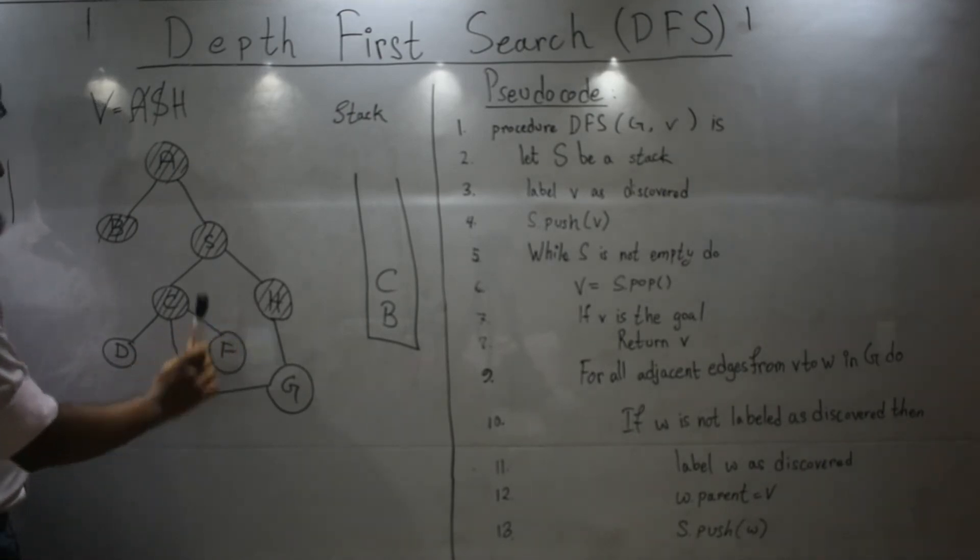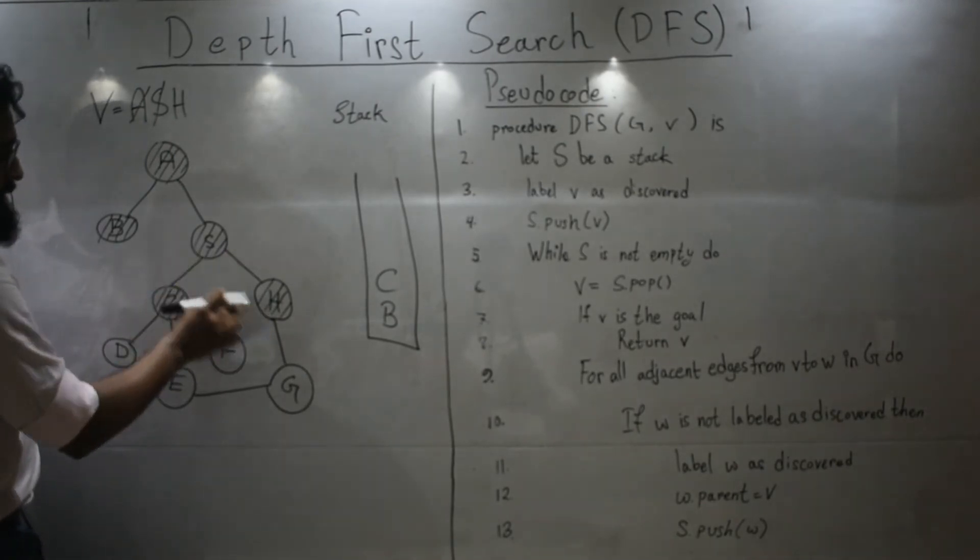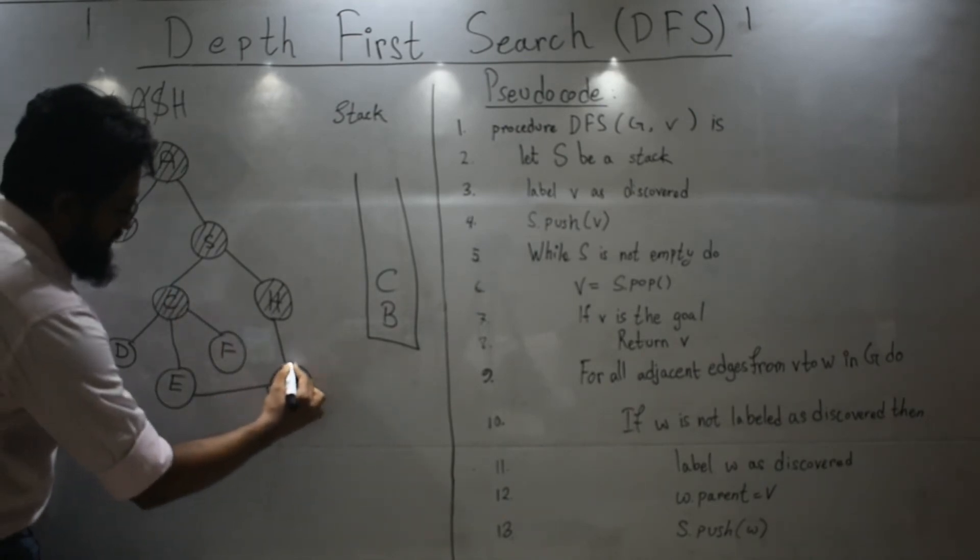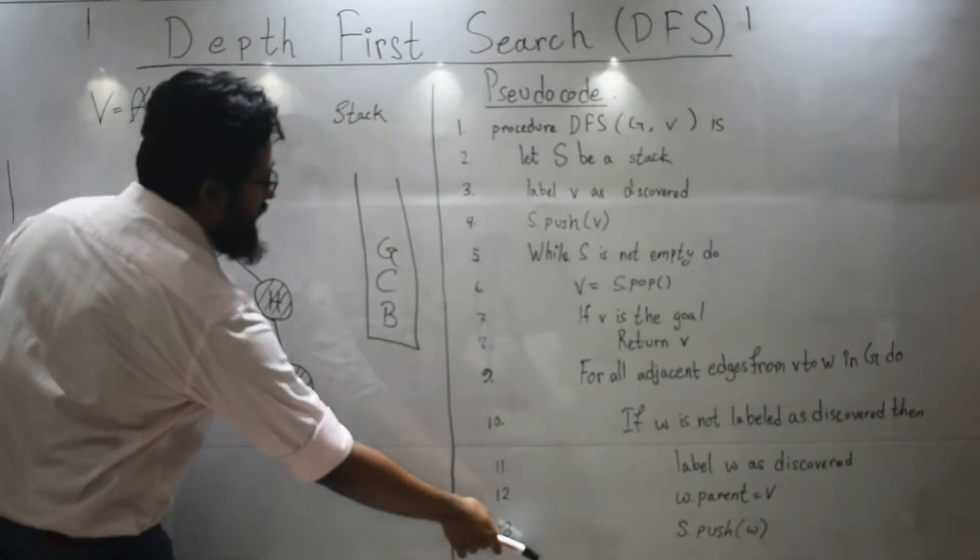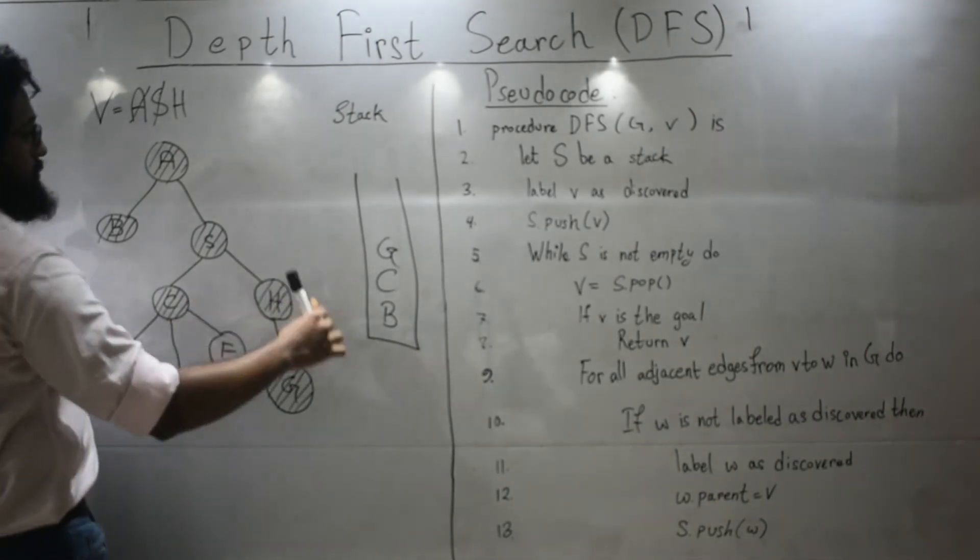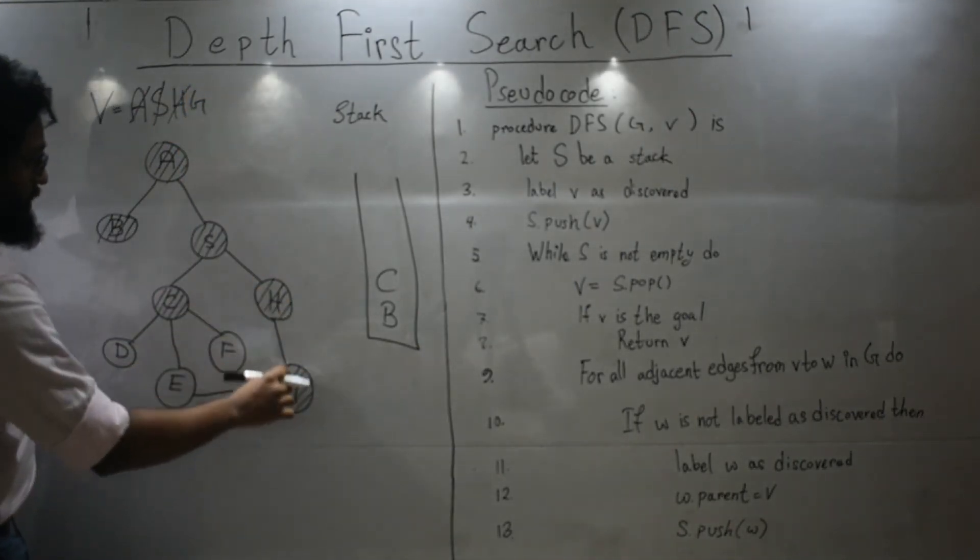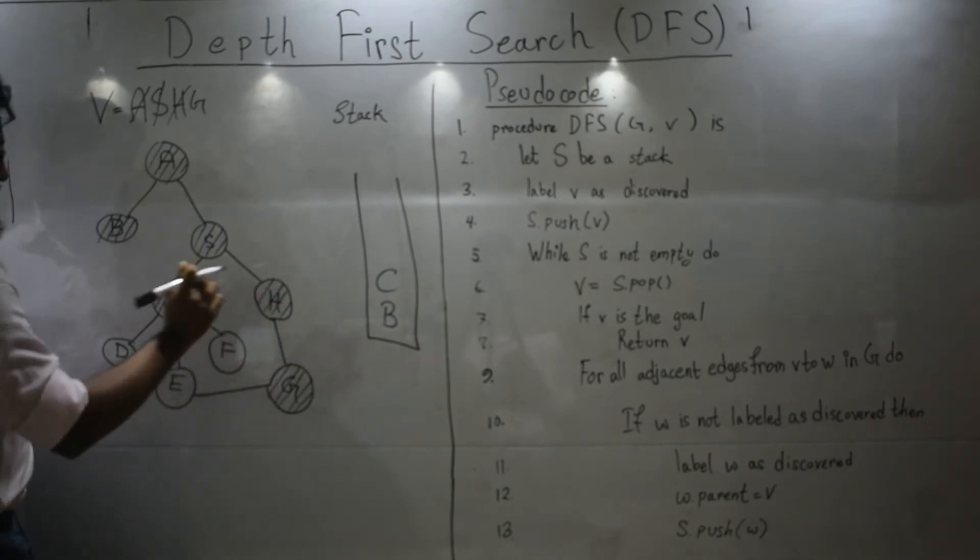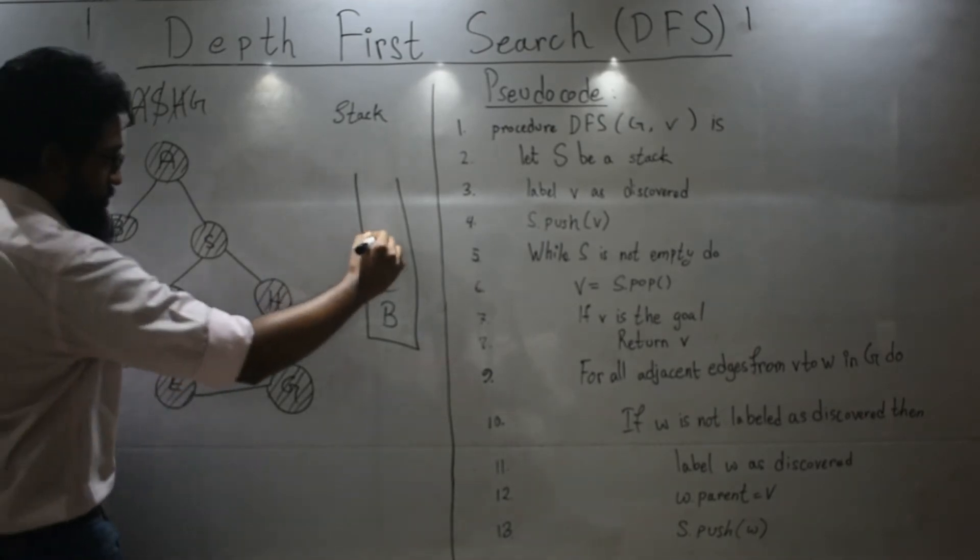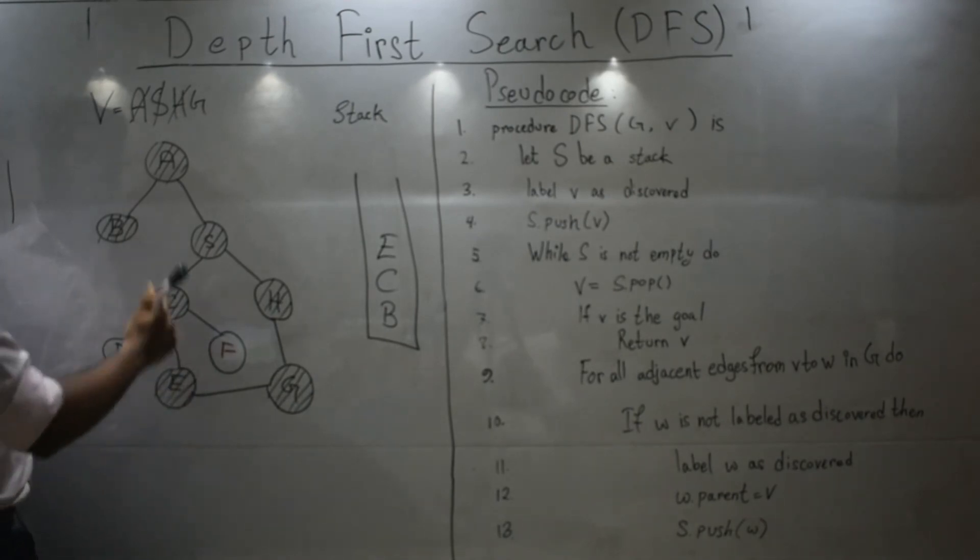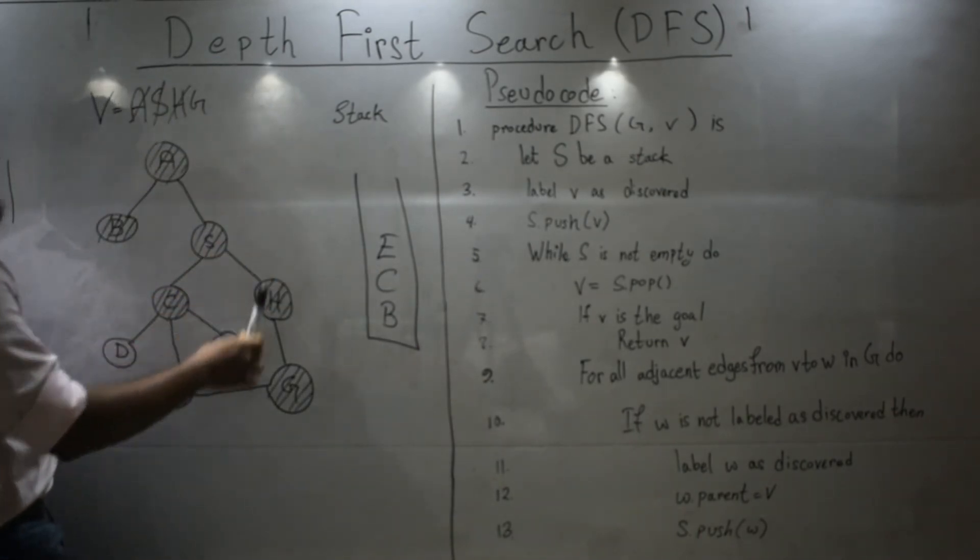Okay now let's again do it for H. The neighbors of H which are not visited yet - the neighbors are S and G - and G is the not visited one. So let's visit and push. And then again you come back to number six. Pop. Let's pop G. And let's see what are the neighbors of G - H and E. So E is the not visited one. Visit it and push. Now again you have reached line number six. So pop. Let's pop E. Place it over here.